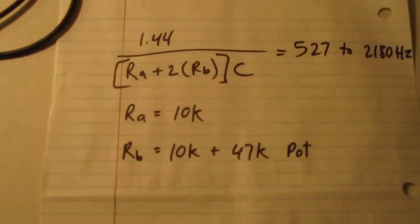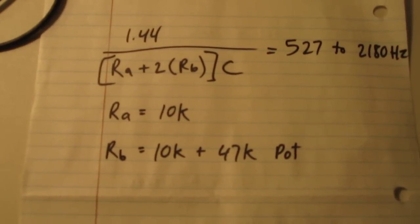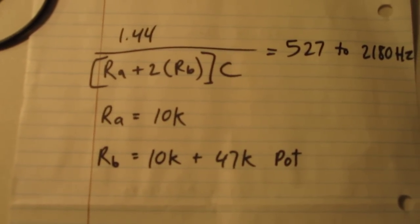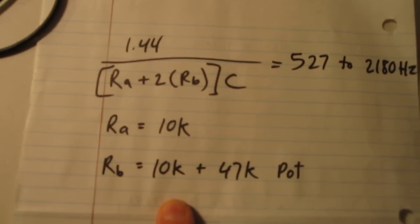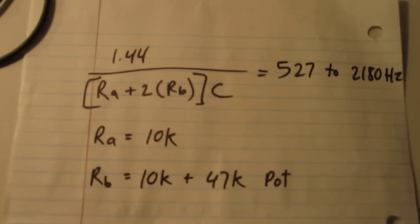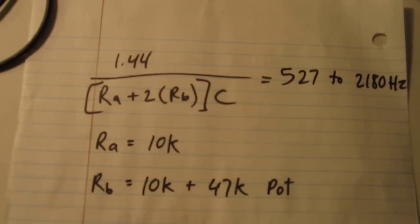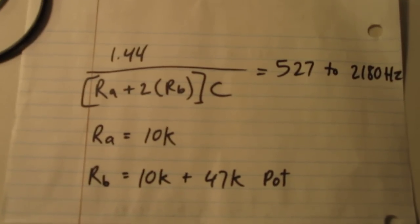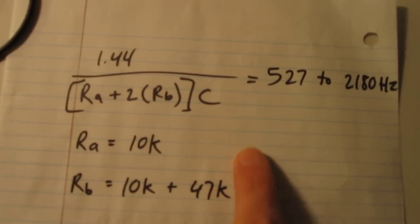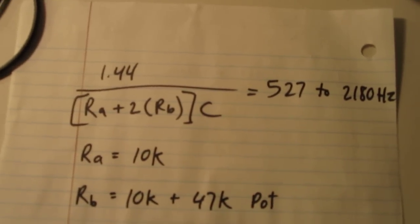Here's the formula to calculate the frequency. This is given by the datasheet. So for RA, I chose 10K. RB, I chose 10K plus in line with a 47K pot for adjusting. And calculated frequency is 527 hertz to 2.18 kilohertz.